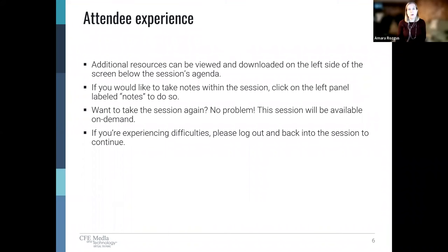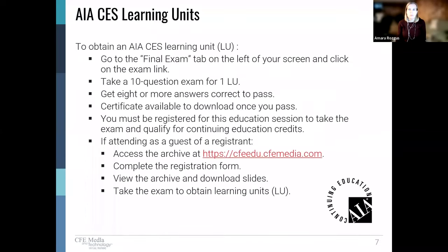For a seamless online experience, here are some tips. Additional resources can be viewed and downloaded on the left side of the screen below the session's agenda. If you'd like to take notes within this session, click on the left side labeled Notes. You can obtain continuation credits by passing an exam at the end of this course. You must get 8 out of 10 questions correct to earn one learning unit or one professional development hour. If you're interested in receiving one AIA CES-approved learning unit, you need to pass a 10-question exam. To take the exam and download your AIA CES certificate, use the final exam option on the left side of your screen.